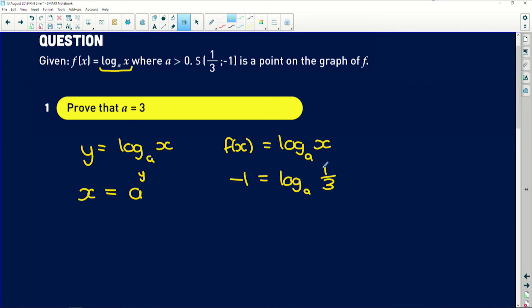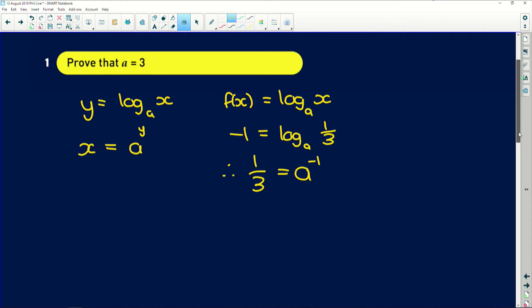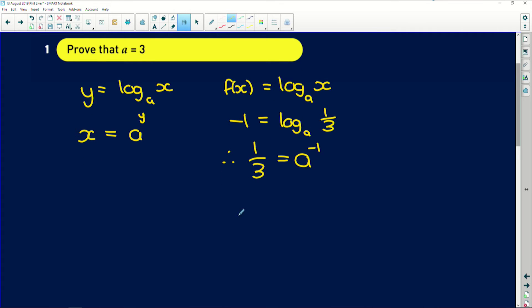So now to find the base of a, we can manipulate it to be in this format. Remember, x is 1/3, so we're going to have 1/3 is equal to the unknown base that we're trying to find to the exponent of y. And remember, if you have a to the -1 by exponent laws, it takes a to the denominator. Similarly, if I had a to the -2, it would be 1 over a squared. So now that we have these two fractions, well the numerators are equal to each other and therefore the denominators must be equal to each other and therefore a is equal to 3, which is exactly what we had to prove. Easy peasy stuff.